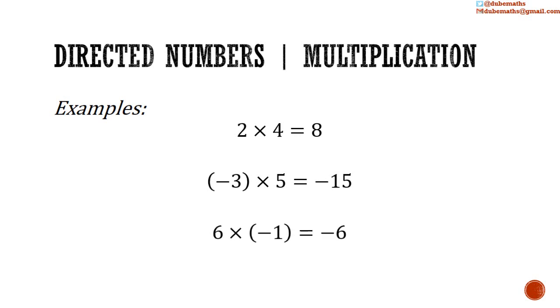Positive 6 multiplied by negative 1: 6 multiplied by 1 is equal to 6. A positive multiplied by a negative is equal to a negative, so negative 6.